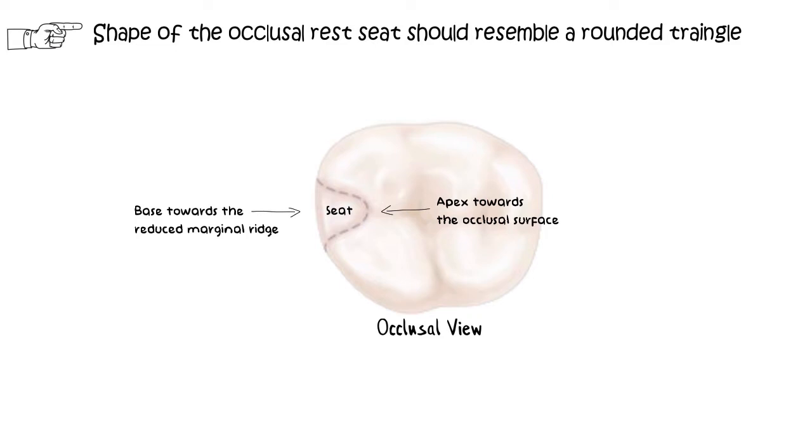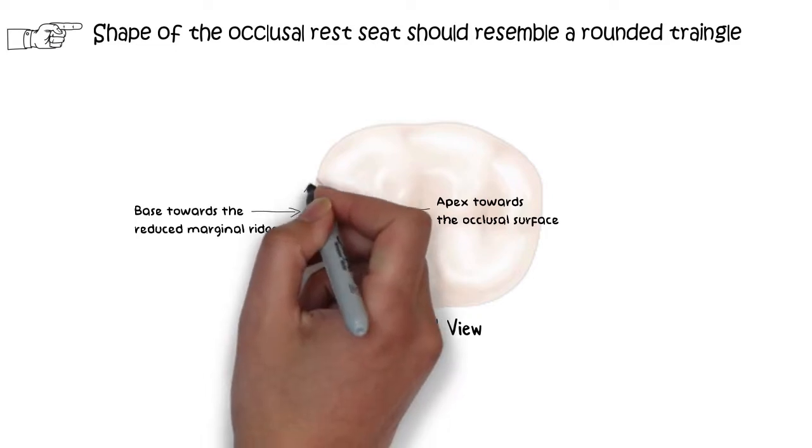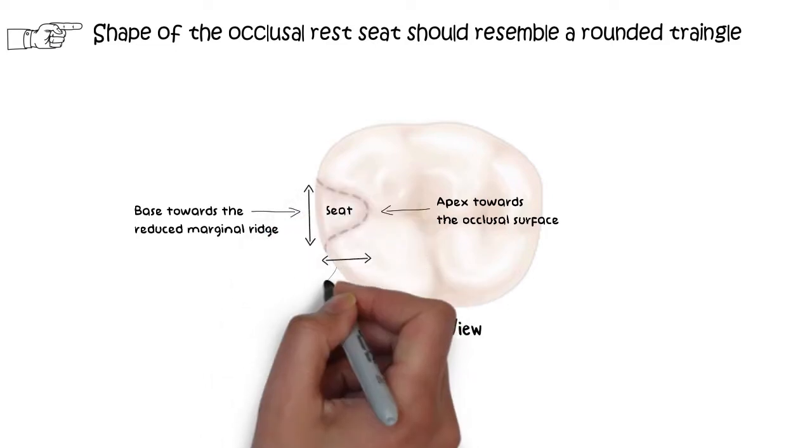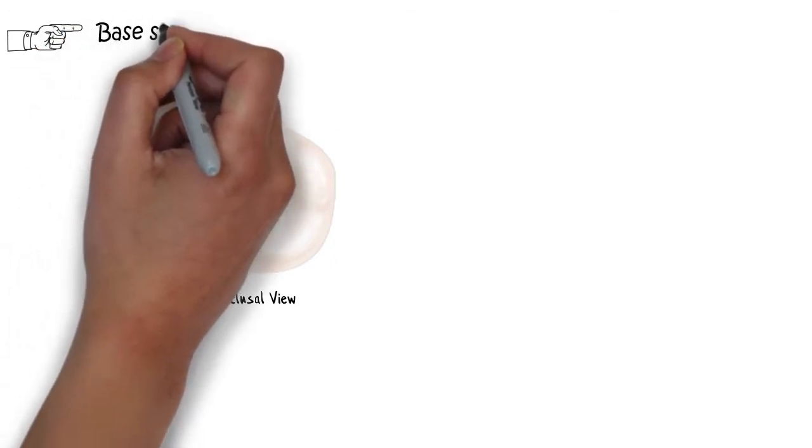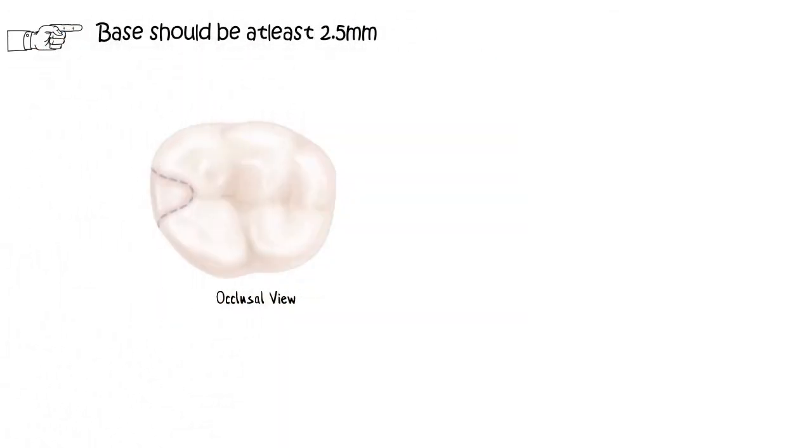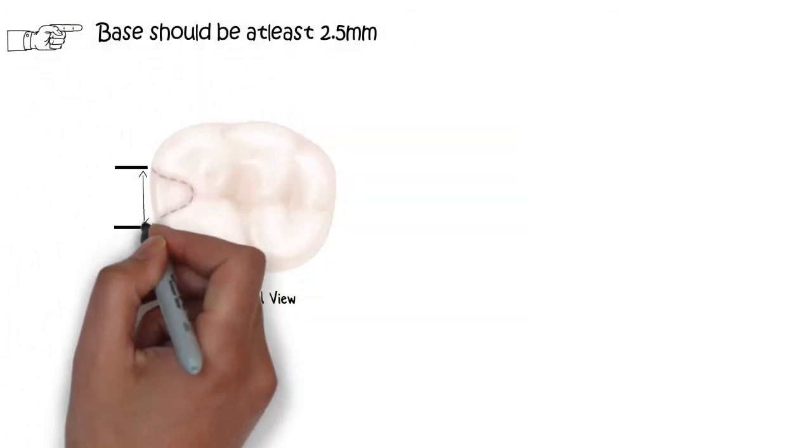While the shape of the seat is triangular, the length and the width should be almost equal to one another. The base of this triangle should be at least 2.5 mm in width to accommodate the adequate bulk of the metallic rest.